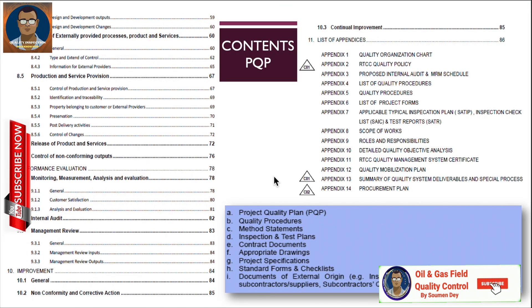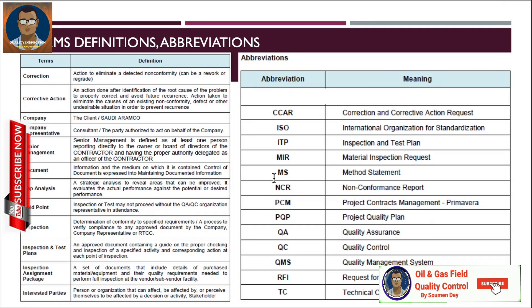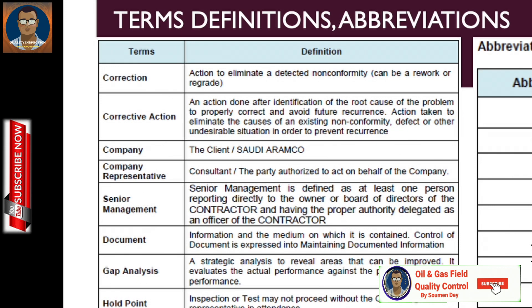Some terms, definitions, and abbreviations discussed in a project quality plan are reflections of ISO 9001 terminology. Correction is action to eliminate a detected non-conformity — it can be a rework or repair. Corrective action is the action taken after identification of the root cause of a problem to properly correct it and avoid future recurrence — action taken to eliminate the causes of an existing non-conformity, defect, or other undesirable situation to prevent recurrence. Other terms include company, company representative, consultant, third party, senior management, document, and gap analysis.